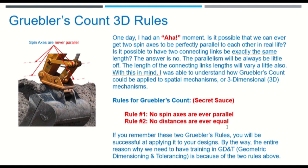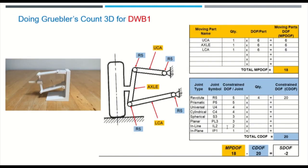So the first double wishbone we want to look at here, we're going to just apply four revolute joints to all four locations here. Again, the three moving parts: the UCA (upper control arm), the axle, and lower control arm (LCA).